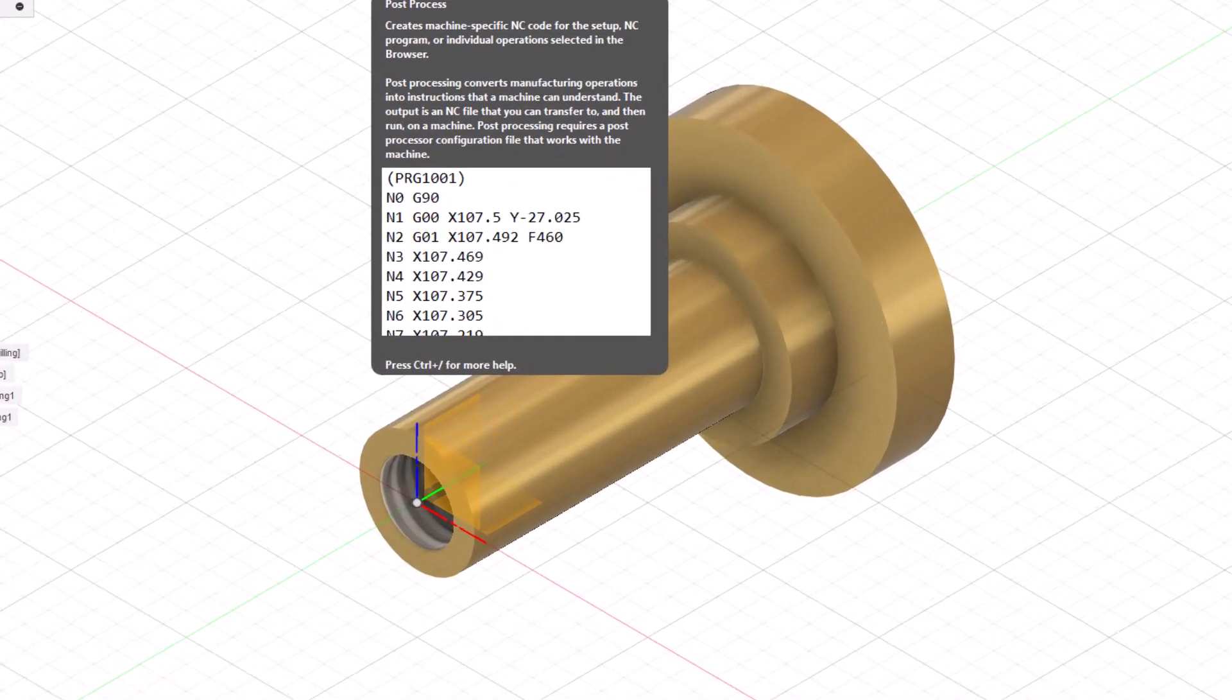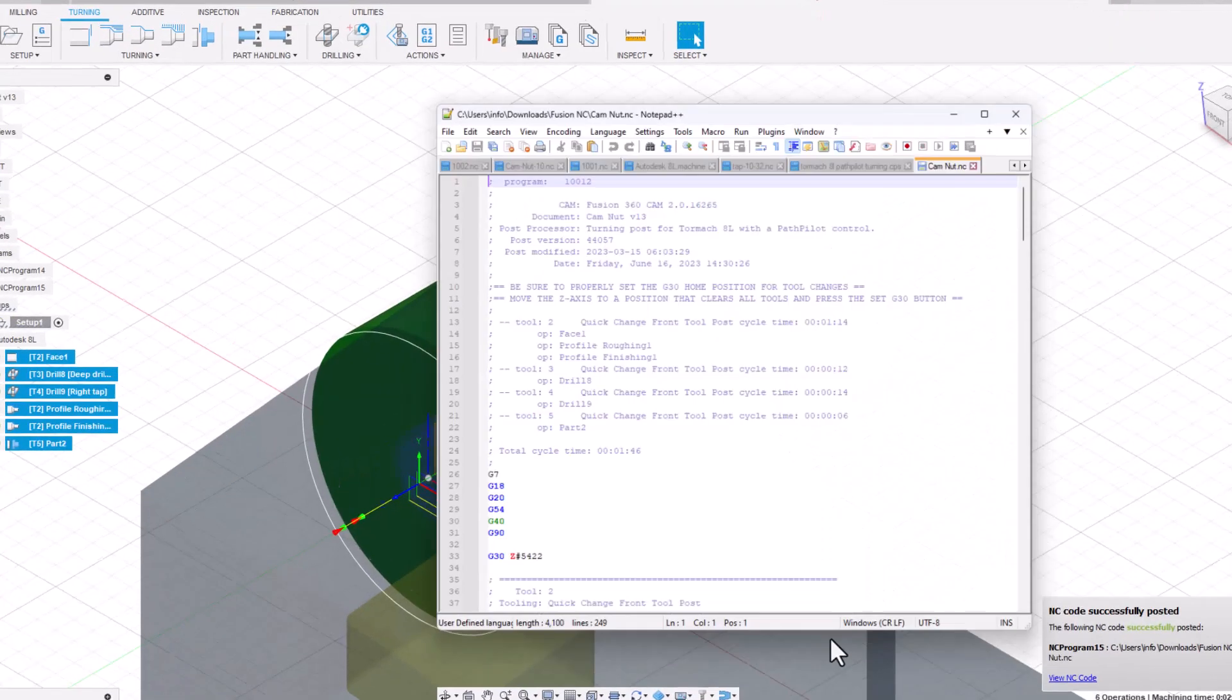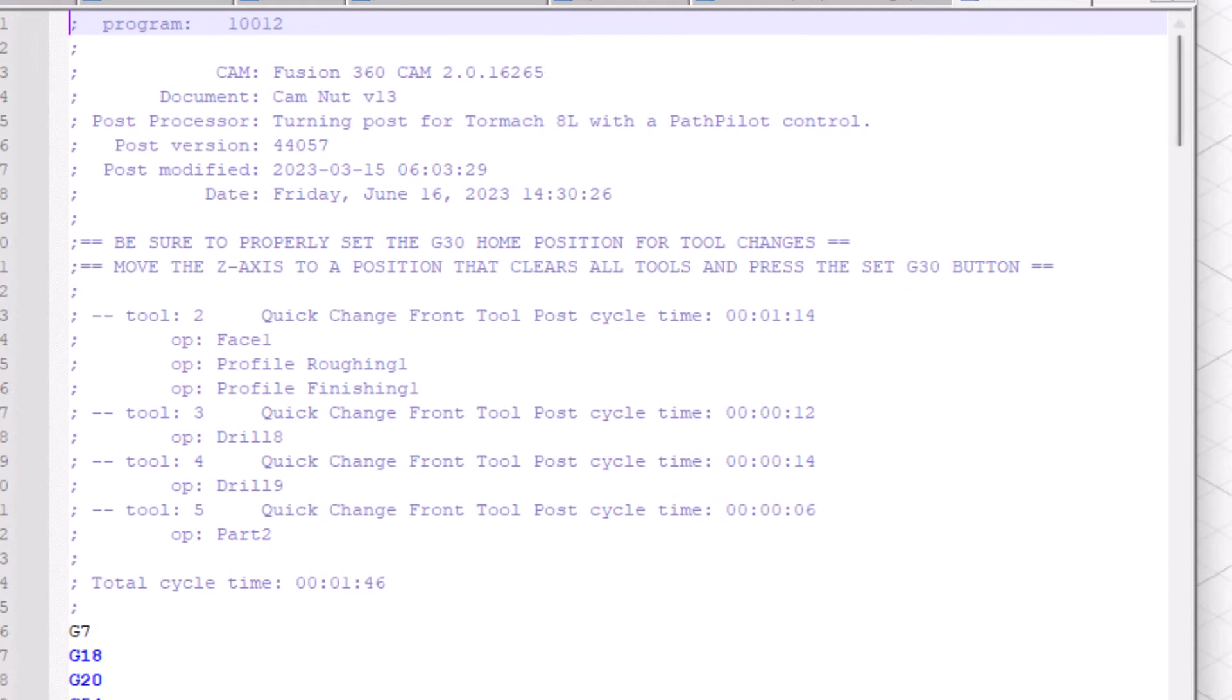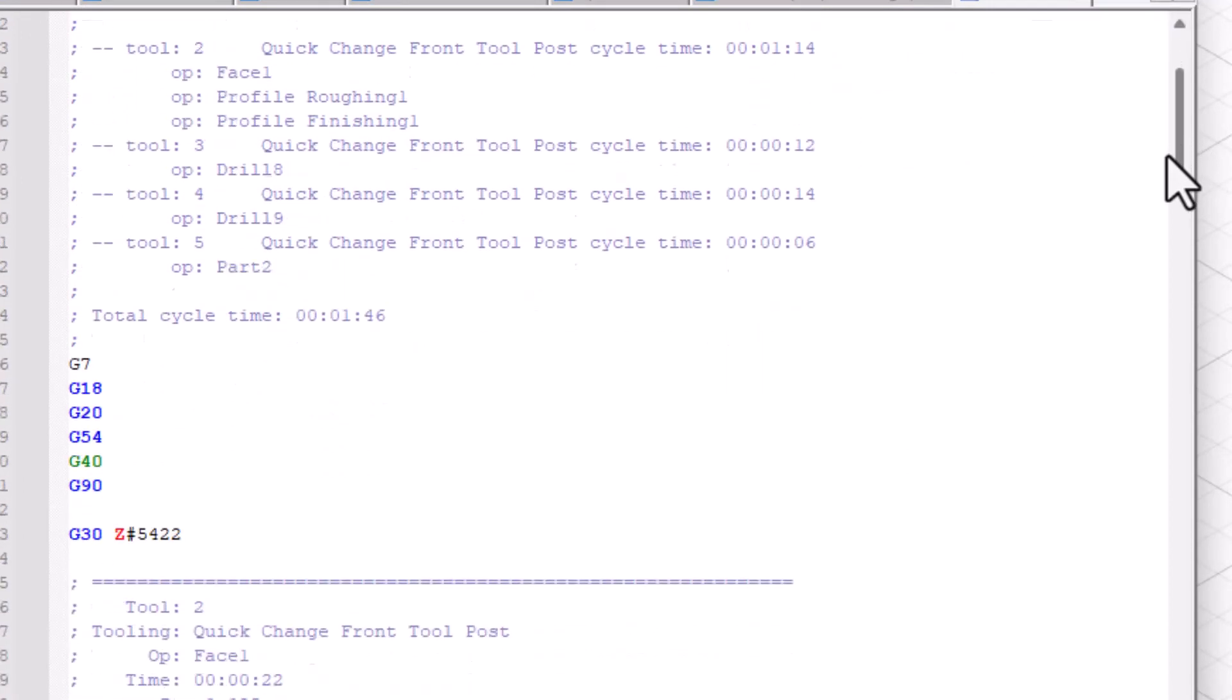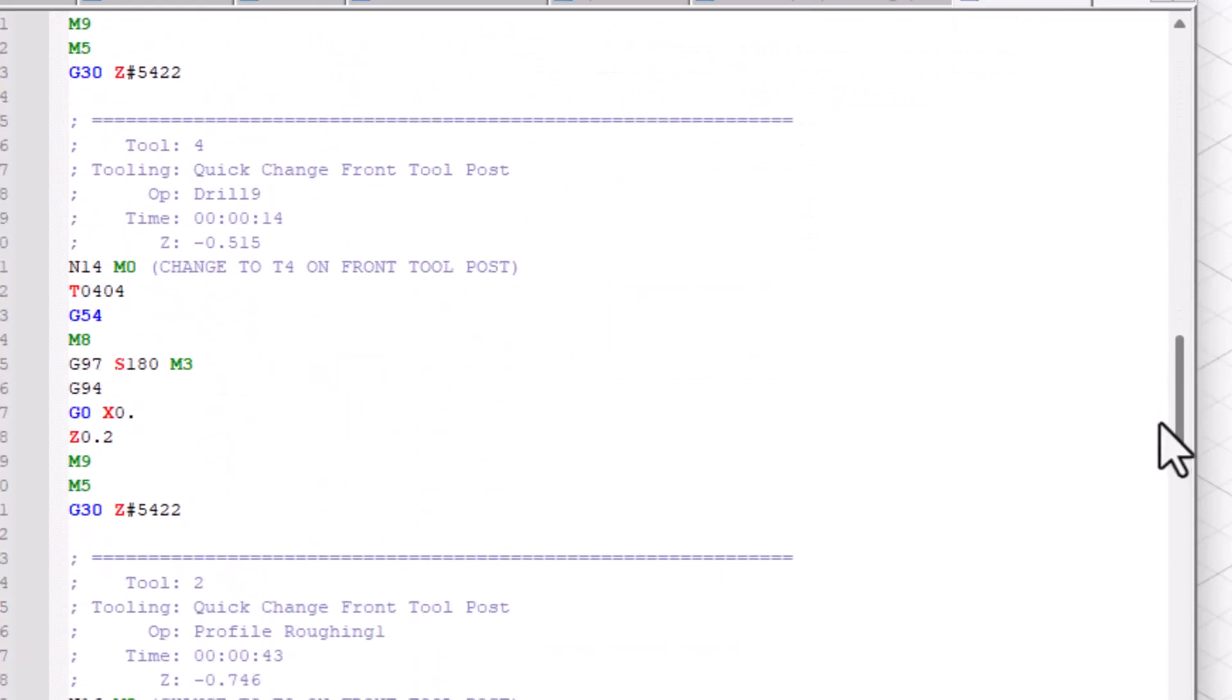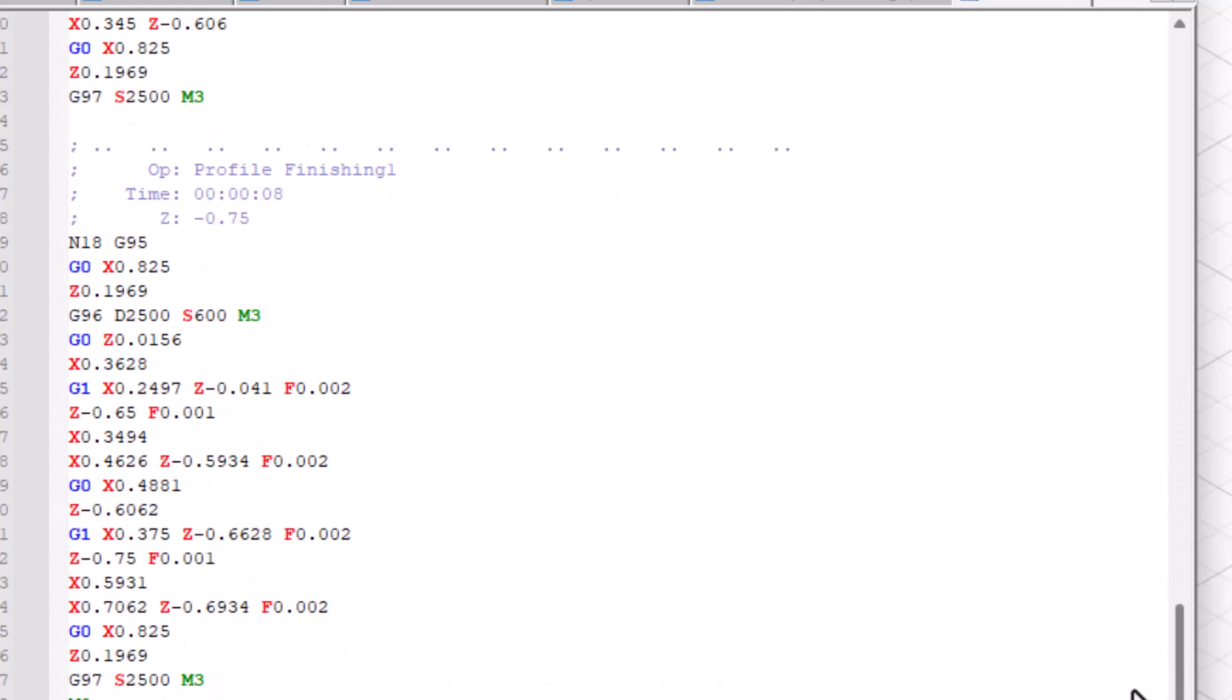I next used the post processor for the Tormac 8L lathe within Fusion 360 to generate the G-code program. This is the resulting G-code program. I then copied this G-code program to a memory stick and transferred it to my Tormac lathe and proceeded to machine my first cam nut. However, few problems arose with the machining operations which needed to be corrected by manually modifying the G-code program.